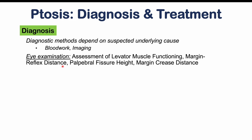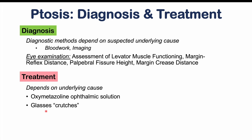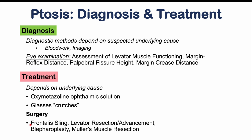Treatment depends on the underlying cause; treating that cause medically can improve ptosis. Another option is oxymetazoline ophthalmic solution, which clinical trials have shown can lift the ptotic eyelid. A non-surgical option is glasses crutches — a modification to the glasses frame to help with ptosis. Surgical methods include frontalis sling, levator resection and advancement, blepharoplasty (cutting the droopy eyelid, especially in older patients), and Mueller's muscle resection.